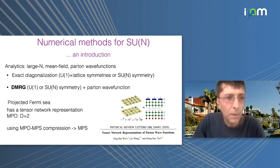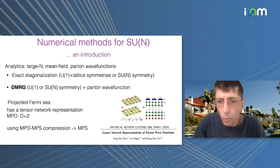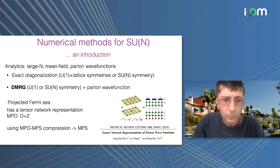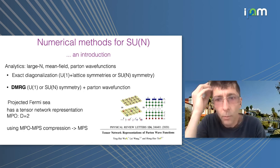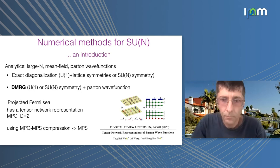The second technique is DMRG. In DMRG you can use Abelian symmetries easily, but you can also use the full SU(N) symmetry. To boost convergence we use the proposal by Zheng-Cheng Gu, Lei Wang, and Ying-Hai Wu to use a projected Fermi sea as a starting point for DMRG, because it has a nice MPO representation. You take free fermions, do a band calculation, populate your bands, and make a Gutzwiller projection — giving you a starting spin wave function.